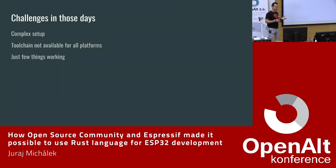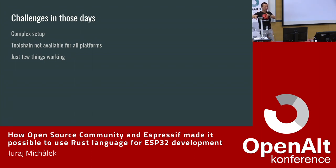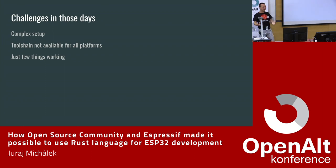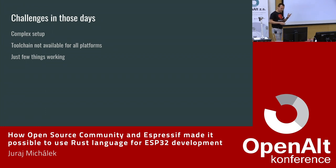Some challenges in those early days: the setup was extremely complex. You needed to build LLVM for your architecture and also target the Xtensa architecture — relatively hard, requiring sufficient weeks of free time. Then on top of that you needed to build the Rust toolchain, because Xtensa is not in the mainstream. The toolchain was also not available for all platforms. Espressif tries to support users on Windows, Linux, and Mac including M1, but in those early days there was no pre-built toolchain and only a few things were working.